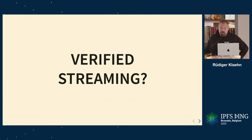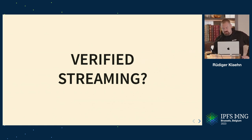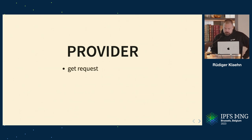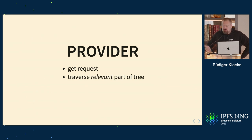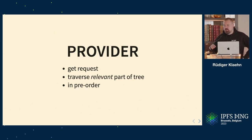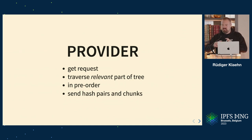How does this enable verified streaming? On the provider side, you get the request, figure out which tree you need, and traverse only the relevant part — everything irrelevant can be ignored. This means you can share data you have only partially downloaded. The traversal is in preorder. You take data from the outboard file, take data from the data file, mix it, and send it over the wire. That's all you need to do — as fast as you could possibly imagine.